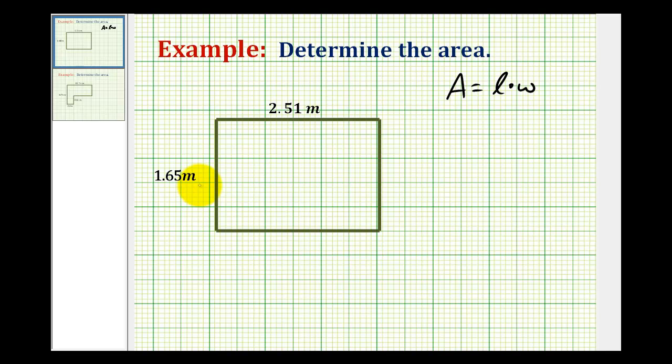It doesn't matter in which order we multiply these because multiplication is commutative. Let's go ahead and write this as 2.51 times 1.65.